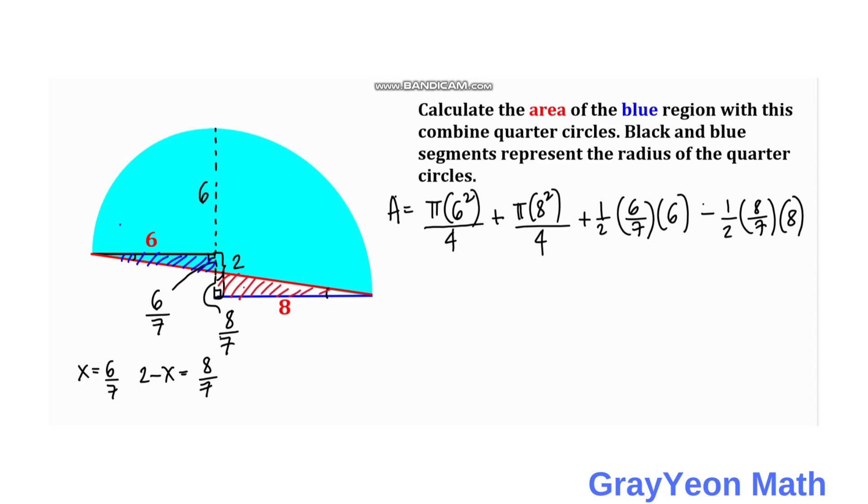Simplifying, we can make this π/4 times (6 squared plus 8 squared). 6 squared is 36 plus 8 squared is 64, so this becomes 100. Then we need to add the two triangles: this becomes 6 over 2, which is 3, or 18/7.